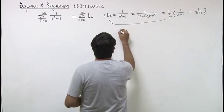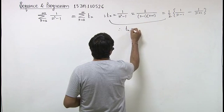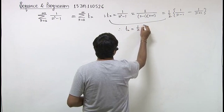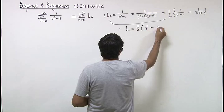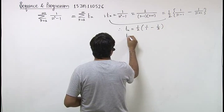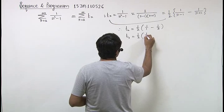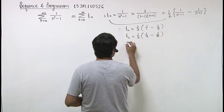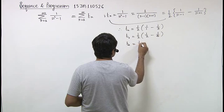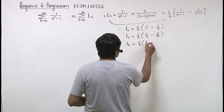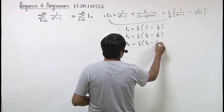So using this result, we can write T2 is 1 upon 1 minus 1 upon 3. T3 is 1 upon 2 minus 1 upon 4. T4 is 1 upon 3 minus 1 upon 5.